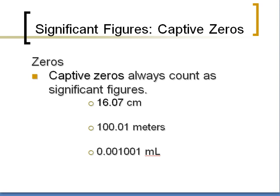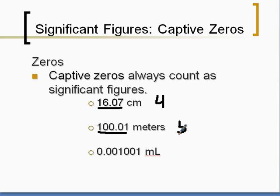The next type is captive zeros — a zero that's in the middle — and we always count them as significant figures. A zero between two non-zero integers is counted, so a four-digit number with a captive zero has four sig figs. A number with a zero in the middle and five total digits has five sig figs. For a number mixing leading zeros and captive zeros, like 0.001004, we never include the leading zeros, but we do include the zeros in the middle — giving four significant figures.